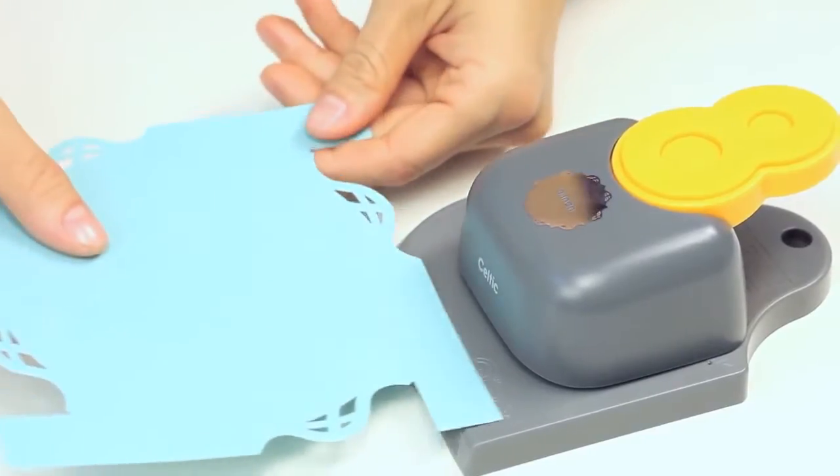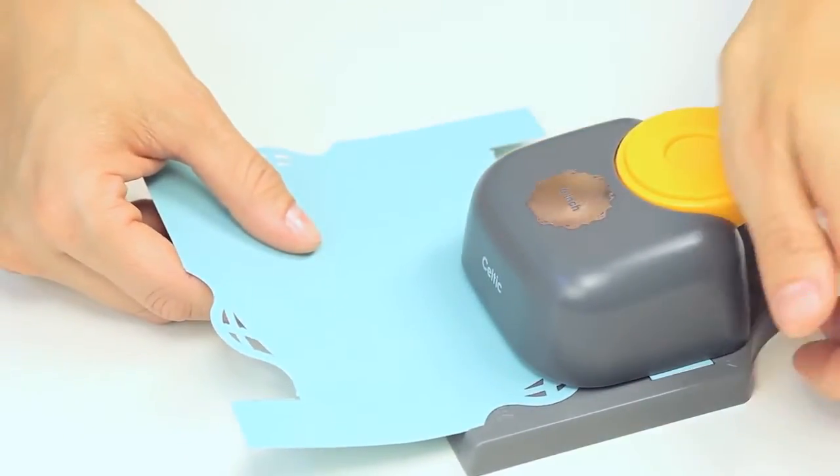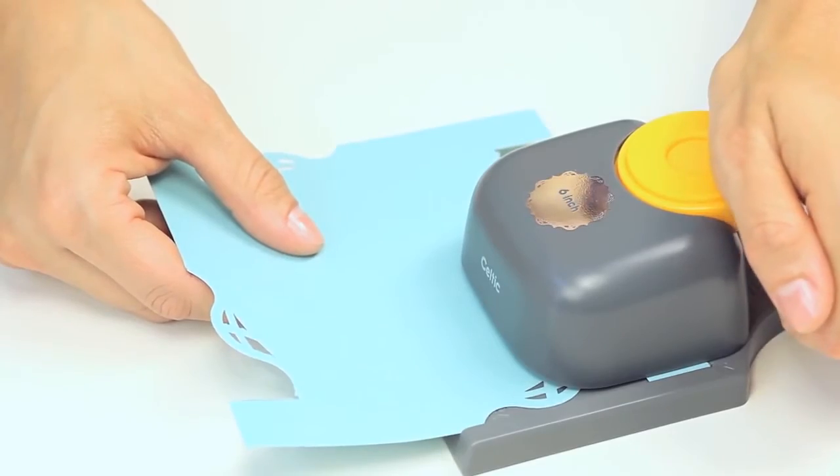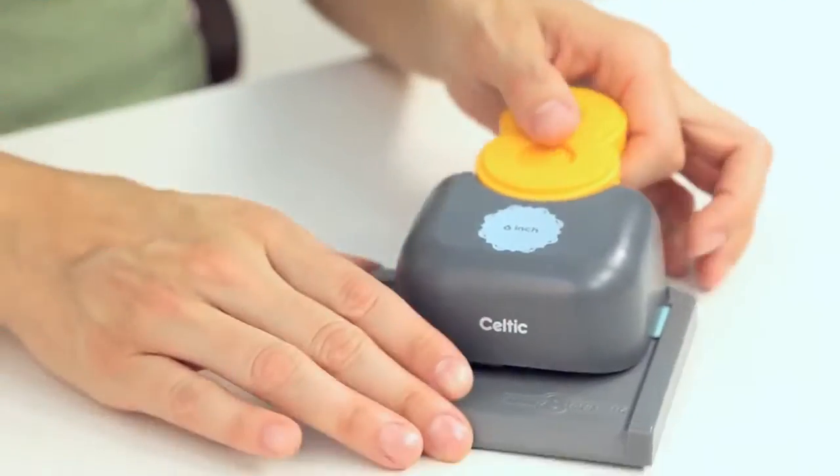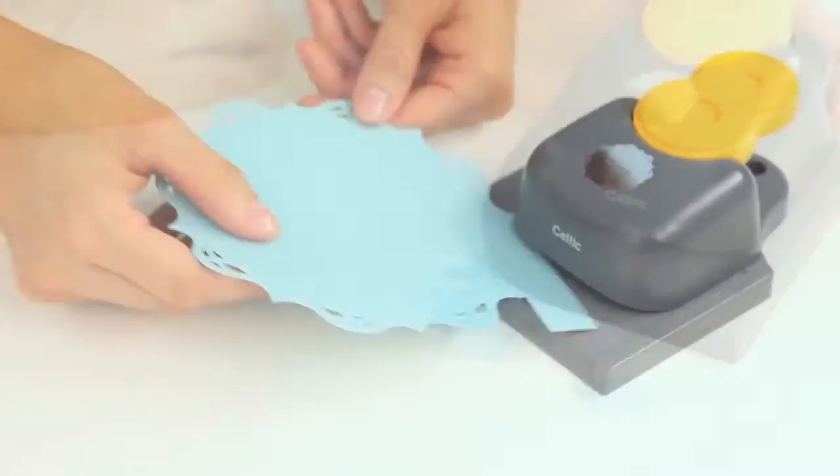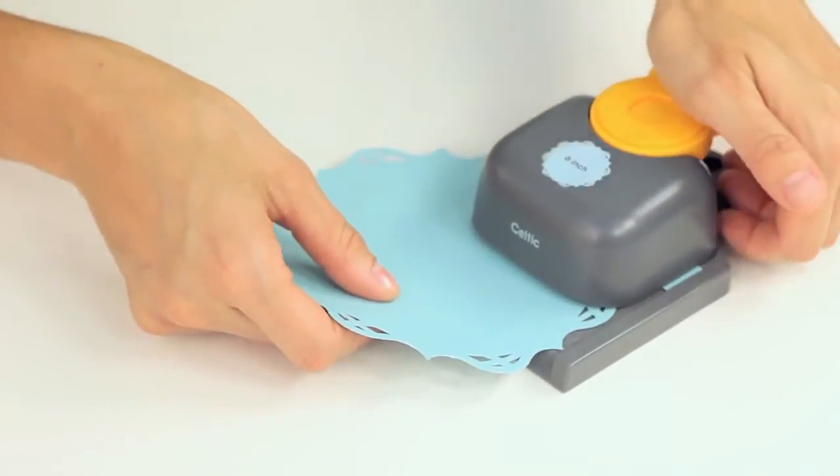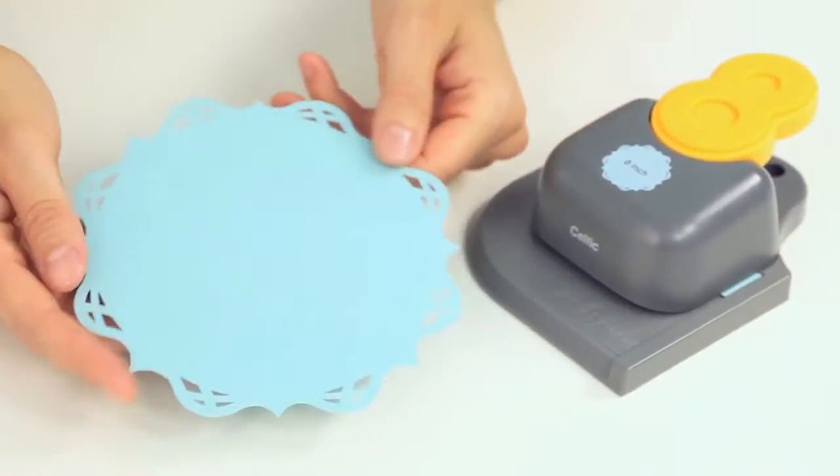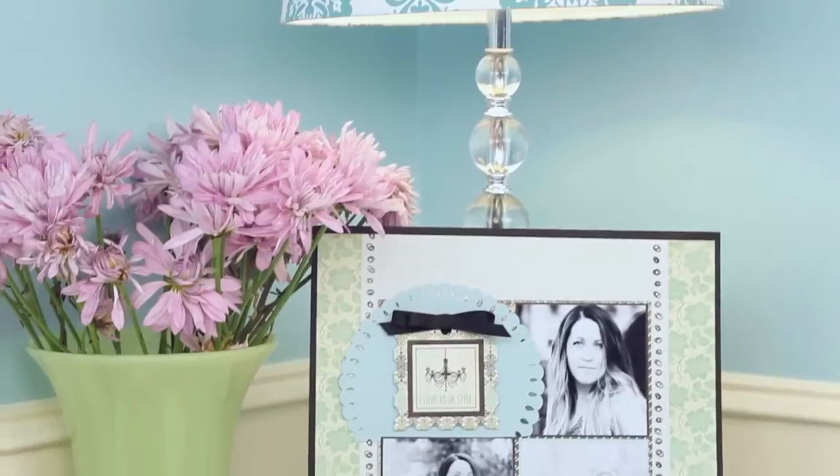Once you are done punching all four corners, turn it over and do the same thing again. On punch 5-8, make sure you dump the corner piece out so it doesn't get in the way. After punch 8, you will have a decorative 6 inch shape that you can use for card making, crafting, and scrapbooking.